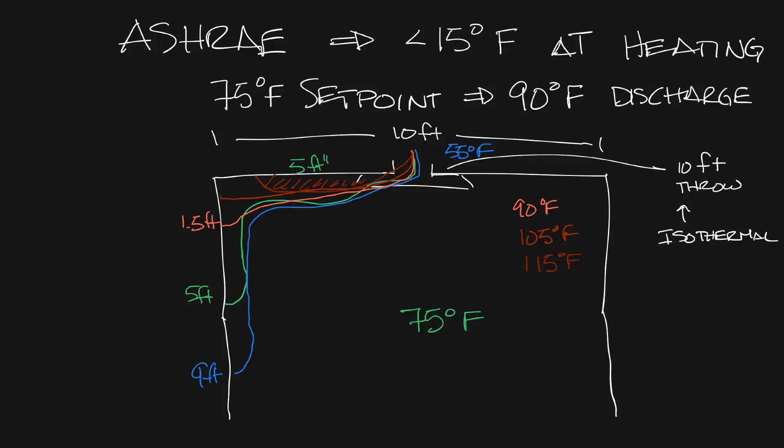So as you raise the supply air temperature you shorten the throw and so now you're not getting much mixing out of your diffuser and that's how you make the air in the space warm. So your air in your space is going to stay colder if you put hotter and hotter air into your diffuser.